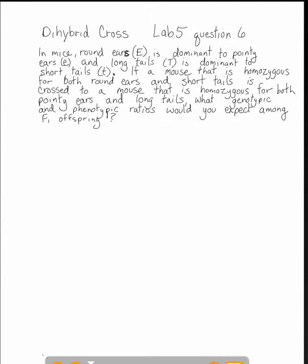In this question we're looking at mice. Round ears is designated by capital E, and small e designates the recessive pointy ears. Since this is a dihybrid cross, we have two different conditions. Not only are we looking at round ears versus pointy ears, we're also looking at tails. A capital T is going to be long tails, and a small t is going to be a short tail.